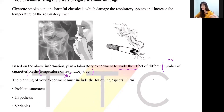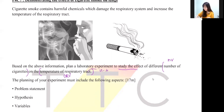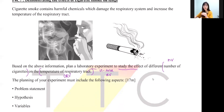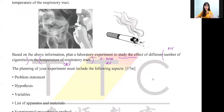'Temperature of the respiratory tract' is your RV. This is the RV because it's the one you measure in your experiment. Since you won't use an actual human respiratory tract, you'll use a replacement — in this case a U-tube. The temperature of the U-tube is your responding variable.